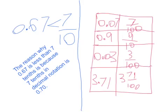On the left is 3 hundredths in decimal notation, and on the right is 3 hundredths in fraction notation. Down here on the left is 3 and 71 hundredths in decimal notation, and on the right is 3 and 71 hundredths in fraction notation.